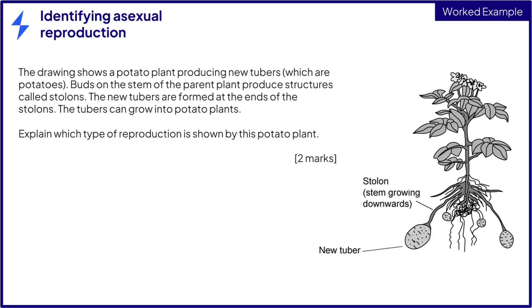Examiners will often give some information in an exam question in the form of a diagram or some text. You will need to identify which type of reproduction the information is referring to. The drawing shows a potato plant producing new tubers, which are actually potatoes. Buds on the stem of the parent plant produce structures called stolons. The new tubers are formed at the ends of the stolons. The tubers can grow into potato plants. Explain which type of reproduction is shown by this potato plant — this is worth two marks.